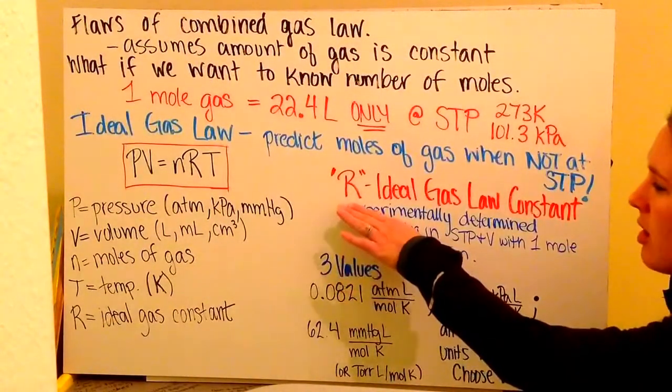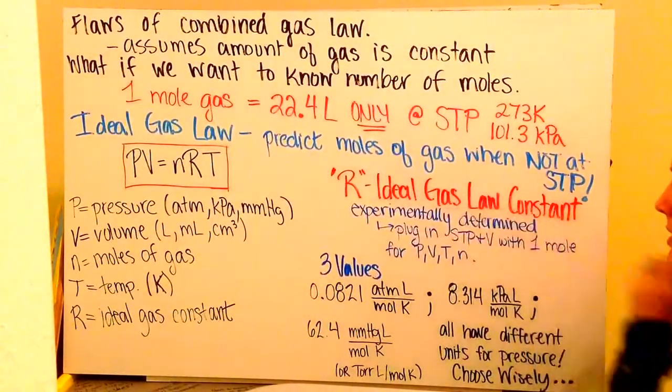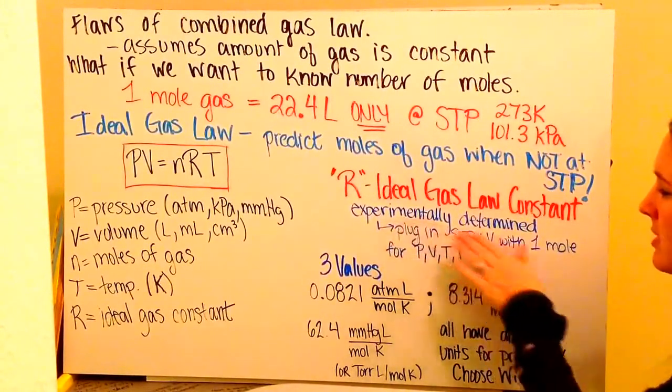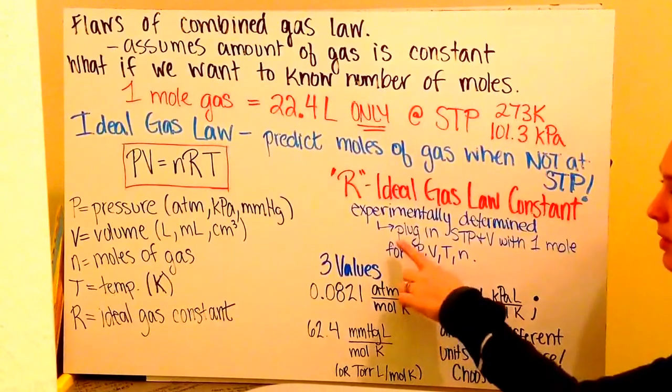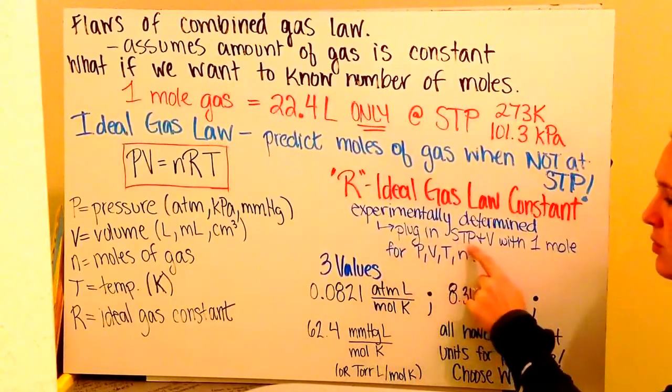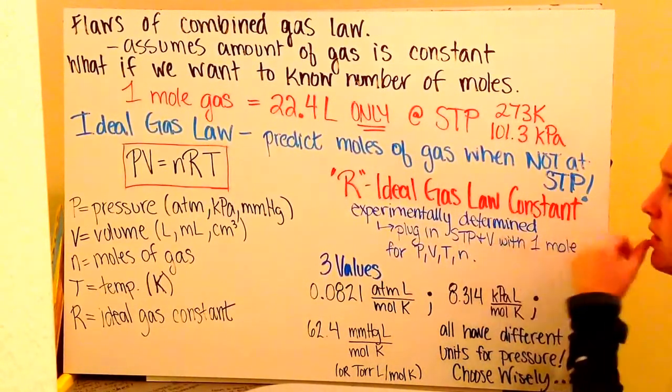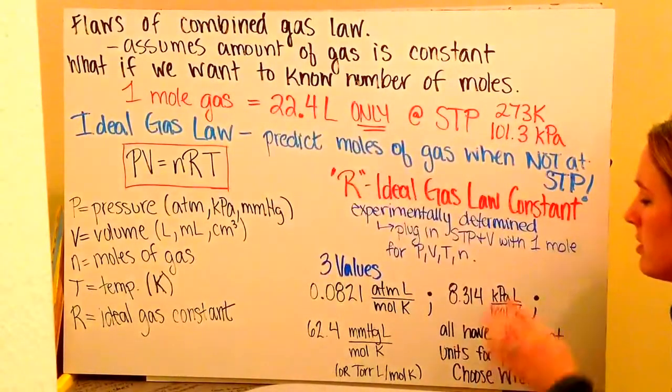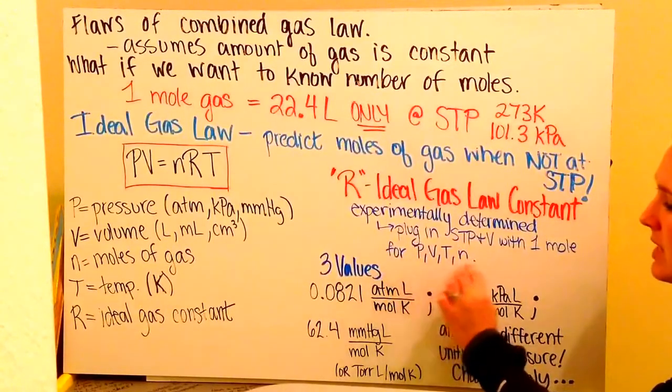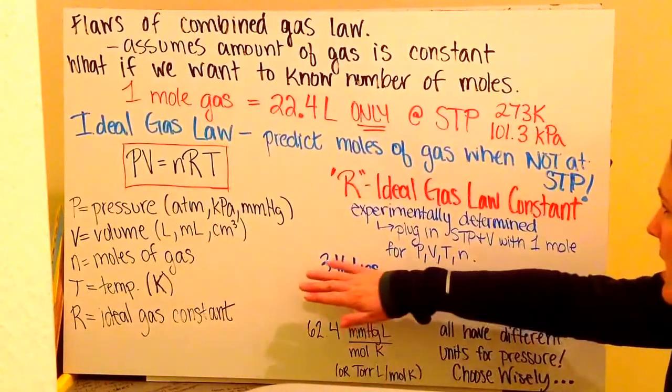So, what is R, our ideal gas constant? Well, it's experimentally determined. This is determined by being able to plug in standard temperature, pressure, standard volume at standard temperature and pressure, 22.4 liters, with 1 mole for P, V, T, and N.